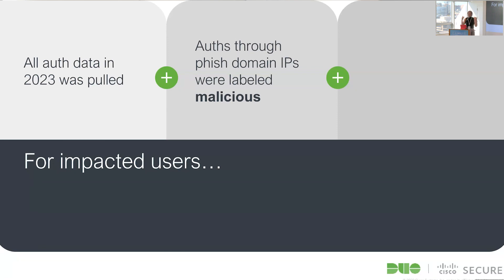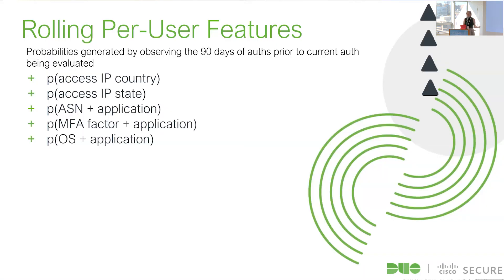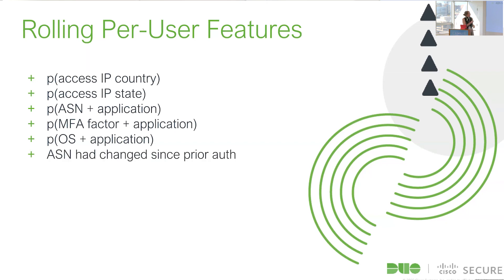We now have a list of domains, a list of IP addresses, and a list of users impacted by these phishing attacks. For each of those users we pull all their authentications from 2023, label the ones from the phishing IPs as malicious — giving us 77 malicious auths and 12,561 benign. An ML practitioner might call this garbage; I'm looking at it thinking: I have 77 true positives, and before I had zero, so this is a good day. We generate features including probabilistic features using the user's prior 90 days — probability of the access IP's state, country, network, MFA factor, and OS relative to the application being accessed.